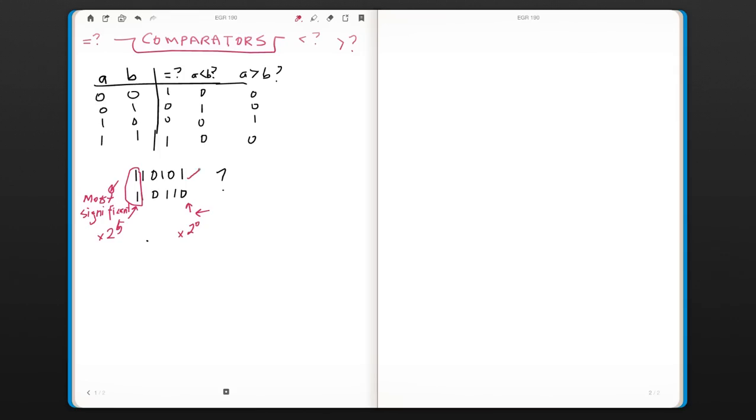Most significant, and these would be least significant. So we name these MSB and LSB, most significant bit and least significant bit.